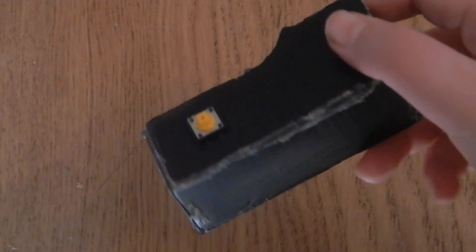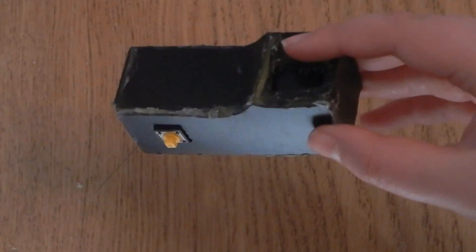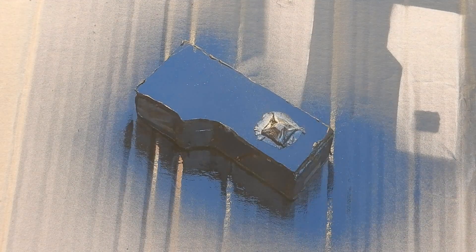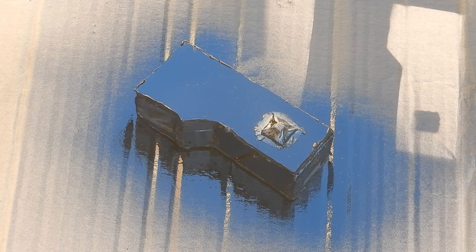I used some sandpaper to finish the edges off and then gave it another layer of paint. Of course I also used some painting tape to cover the places I didn't want to paint like the screen and the button.